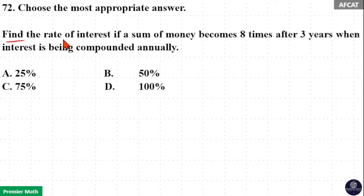Choose the most appropriate answer. Find the rate of interest if a sum of money becomes 8 times after 3 years when interest is being compounded annually.